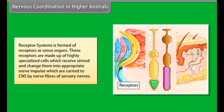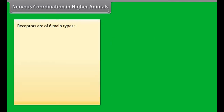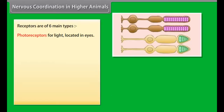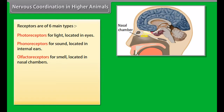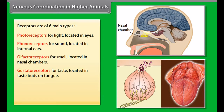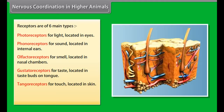In arthropoda, a centralised nervous system like annelids is present, but their nerve ring is circumesophageal. In higher organisms, three types of systems coordinate to control and coordinate body functions: the receptor system, the nervous system, and the effector system. Receptors are made up of highly specialised cells which receive stimuli and change them into appropriate nerve impulses carried to the CNS by sensory nerve fibers.